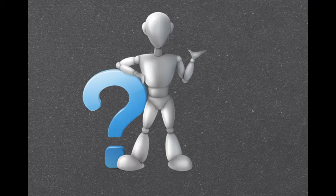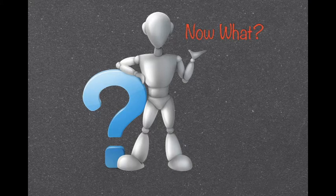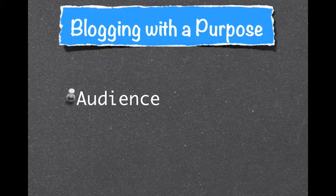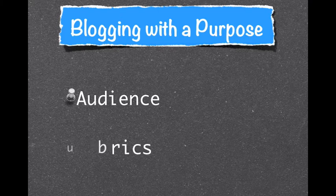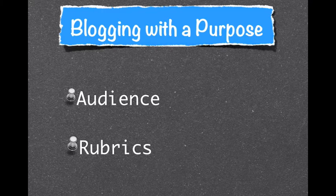So now you might be asking yourself, well blogging is neat, but now what? What do kids do with the blog? They need blogging with a purpose. First of all, they need an audience. Blogging can create an instant audience for students. Students also need to know expectations for blogging. A simple rubric can provide students with blogging expectations. Rubric templates will be made available during the face-to-face session for you to develop for your students.